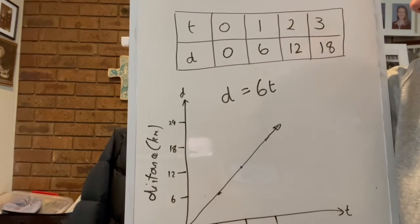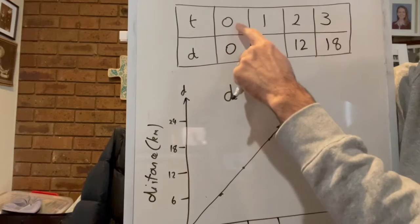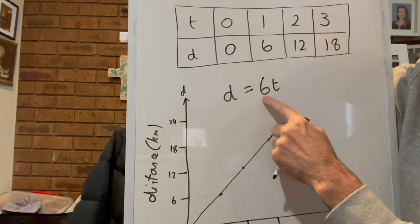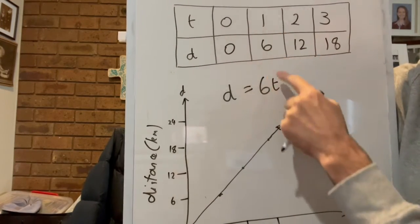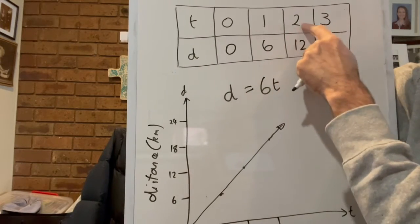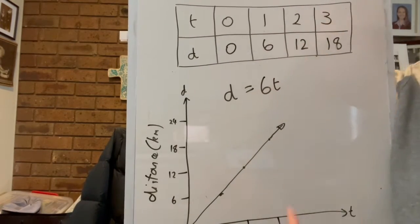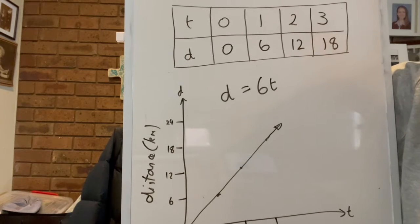And we can see if we put zero into that, zero times six gives us zero here. One times six will give us six here. Two times six will give us 12. So distance equals 6t.